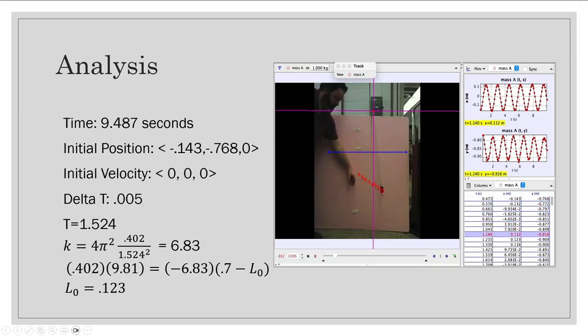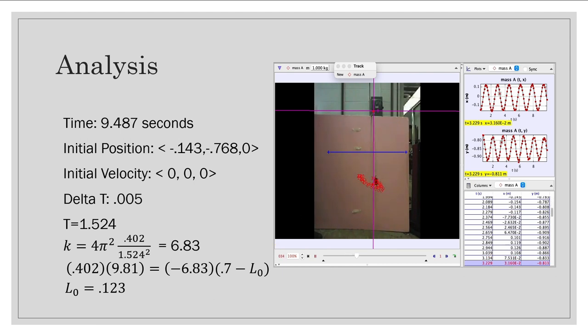Here is the video of the oscillating object. The time of the video was 9.48 seconds since the time he released it and it stopped. The initial position was negative 0.143 for x, and negative 0.768 for y, and the initial velocity in both directions was 0. Delta t, we got 0.005 by looking at the time of each x value and subtracting. To find t, we looked at the peak of the graph and subtracted one by the previous one to get 1.524. And then we were able to plug that into the spring equation from earlier to get our spring constant of 6.83. And we plug that into our other spring equation to find L0, which was 1.23.